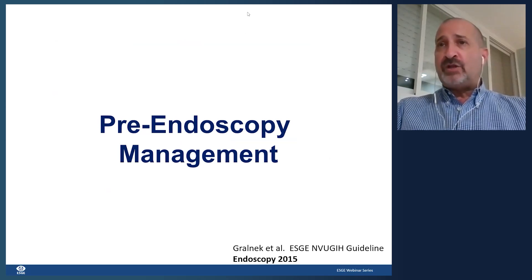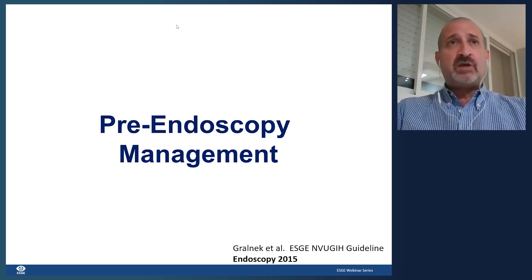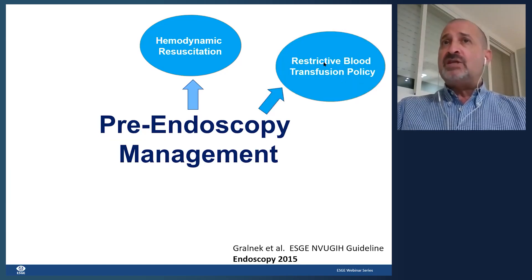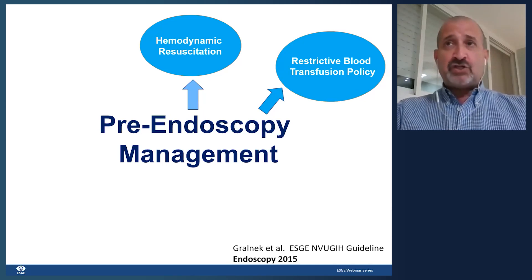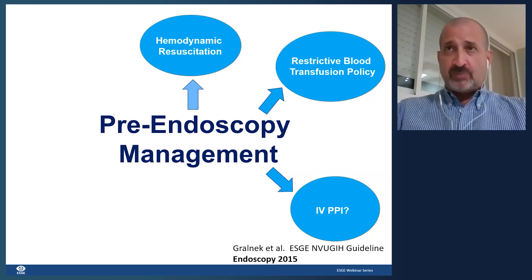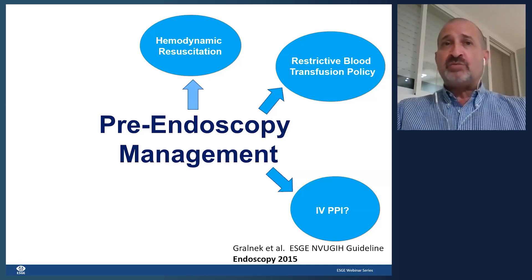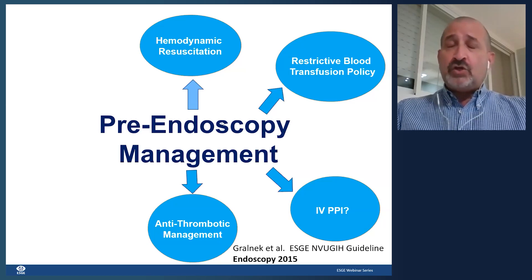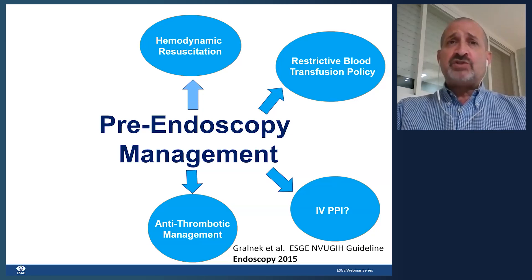For pre-endoscopy management, we need to think first about hemodynamic resuscitation — initially with crystalloid fluids. Today the recommendation is a restrictive blood transfusion policy, as less blood is probably beneficial depending on hemoglobin level. We also want to consider starting IV PPI, potentially in the emergency department, as data shows it may reduce significant endoscopic stigmata at the time of endoscopy.